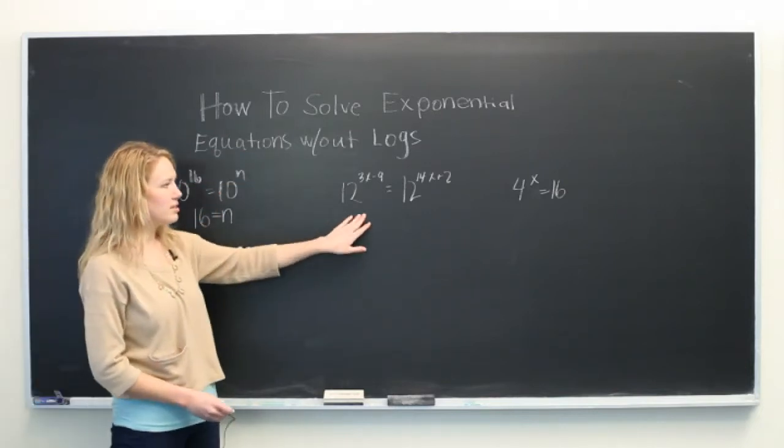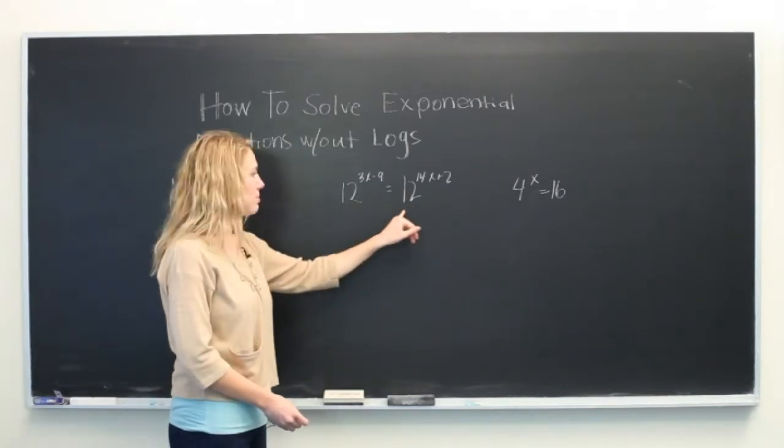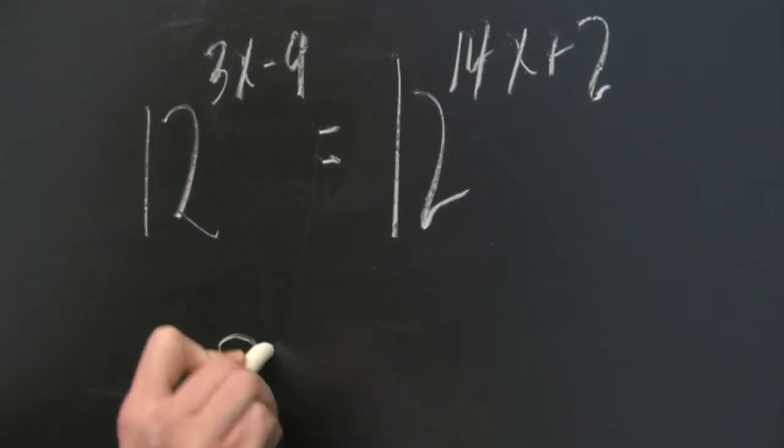When we move on to this exponential equation, we simply bring down the exponents since the bases are both 12 and we solve.